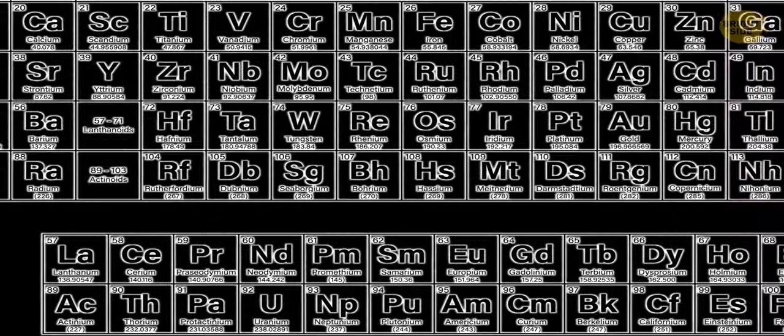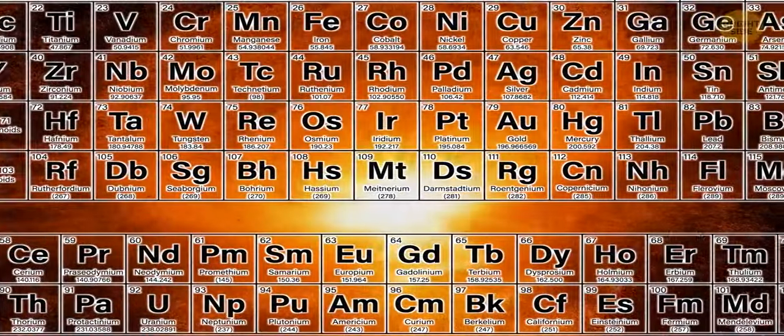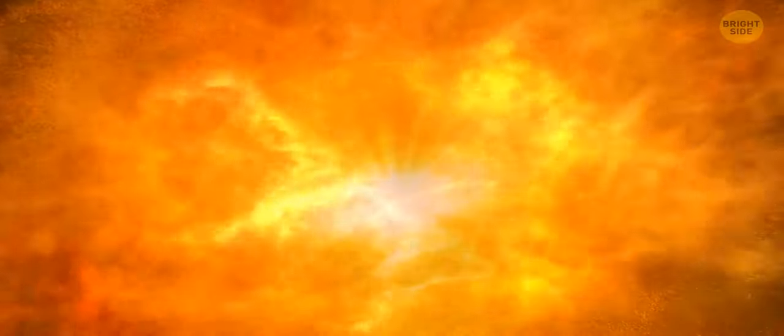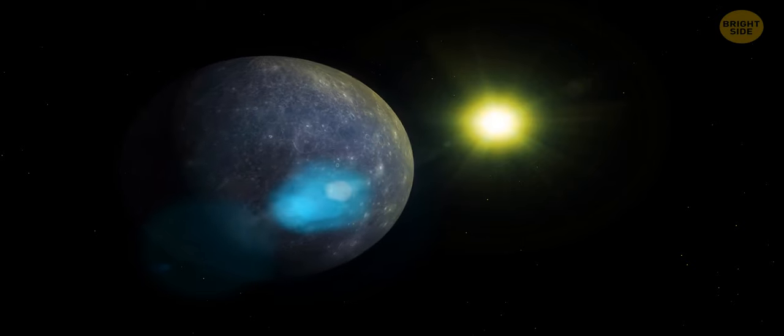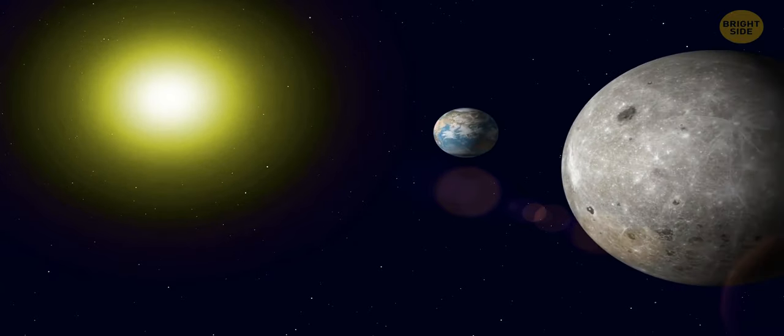Iron is just a few steps above titanium in the periodic table. And when iron forms, fusion stops and a star collapses. Rho Cass is really close. Or, more correctly, was really close.